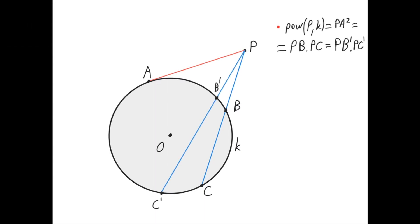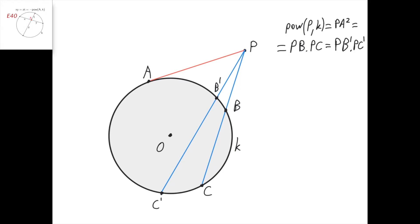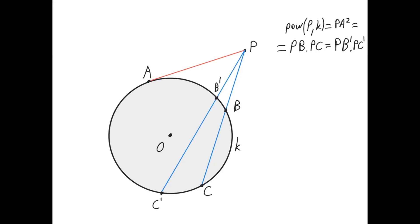This definition only works for points P outside of the circle, but we can define the power of a point for points P inside the circle as well. We're going to give a more general definition for power of a point that works no matter where point P is — it could be outside of the circle, inside of the circle, or on the circle itself.